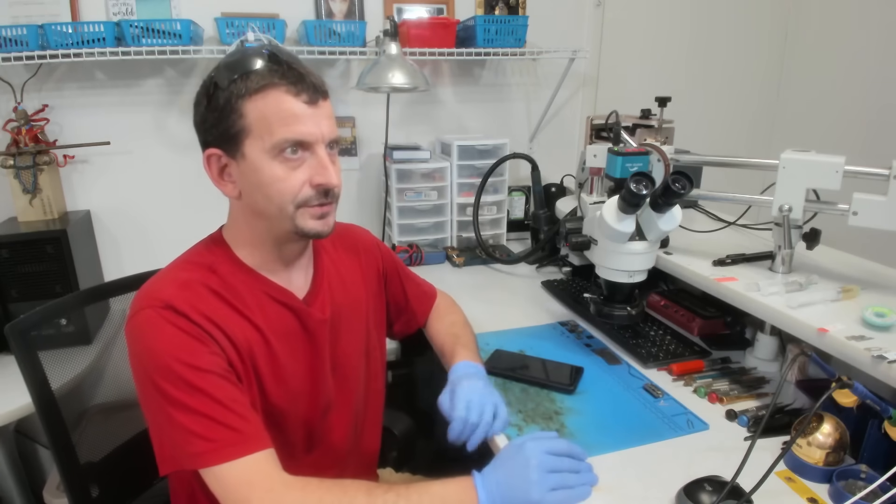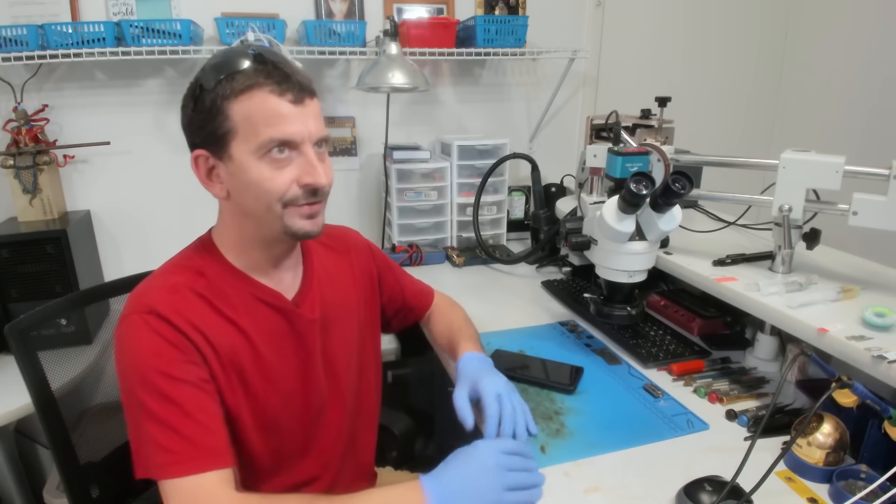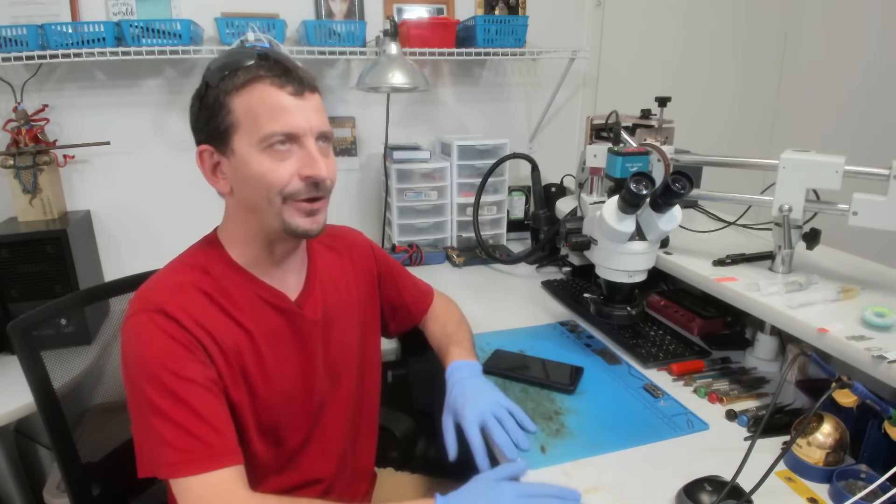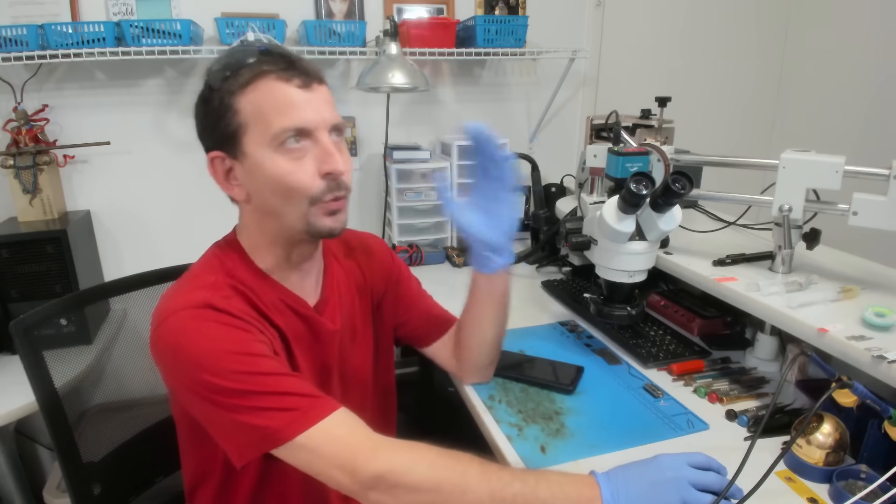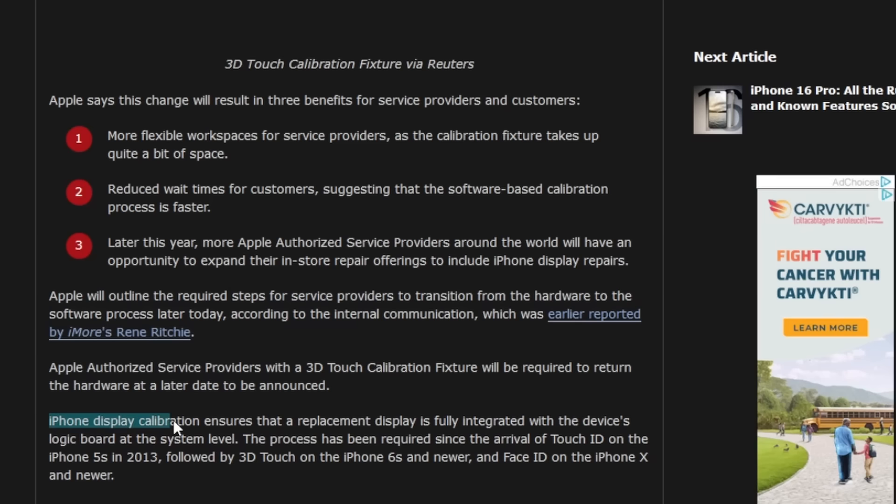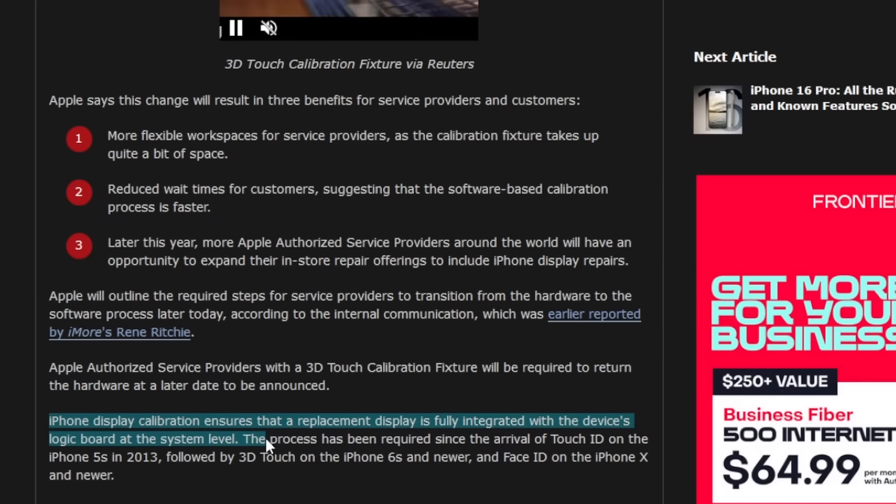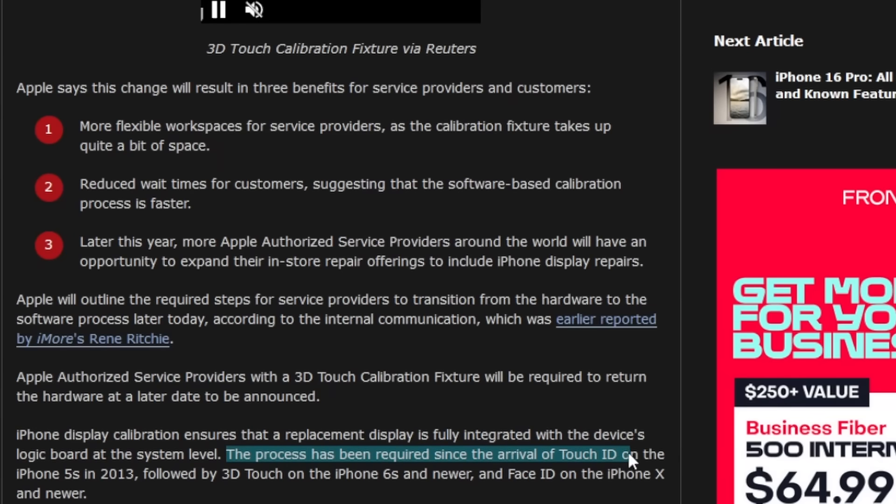So, as far as displays goes, I might get crucified saying the touchscreen needs to be calibrated and on and on and on. Well, just have a look at this article from Mac Rumors dated for 2018. iPhone display calibration ensures that replacement display is fully integrated with the device's logic board at the system level. The process has been required since the arrival of Touch ID on the iPhone 5S in 2013, followed by 3D Touch on the 6S and newer and Face ID on the iPhone 10 and newer.